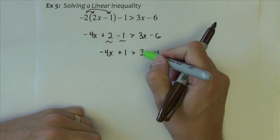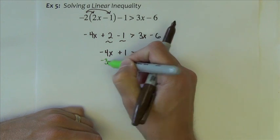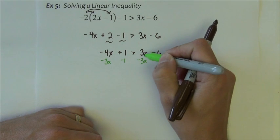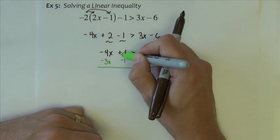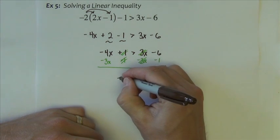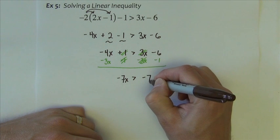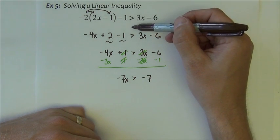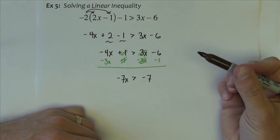Next I'll move terms around. This 3x, I'm going to subtract it to the left. This 1, I'm going to do its opposite, so I'm going to subtract it to the right. So the 3x's cancel, the 1's cancel, and we have negative 7x is greater than negative 7. Notice all the while, this greater than symbol has stayed a greater than symbol. We have not moved it, flipped it, done anything with it.